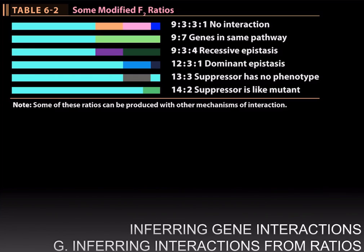Finally, it is important to keep in mind these modified 9:3:3:1 ratios because they help us determine what kind of gene interactions multiple genes that control the same phenotype have. If you have a ratio of 9:3:3:1 for the four phenotypic classes, that means the two genes are independent and have no interaction.